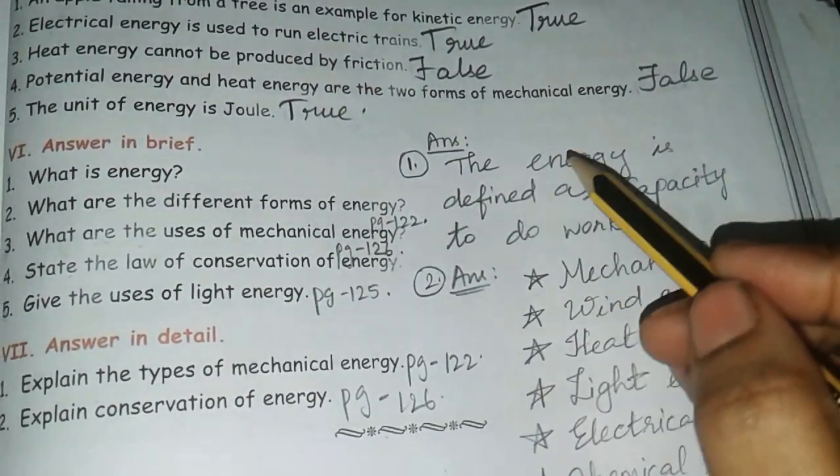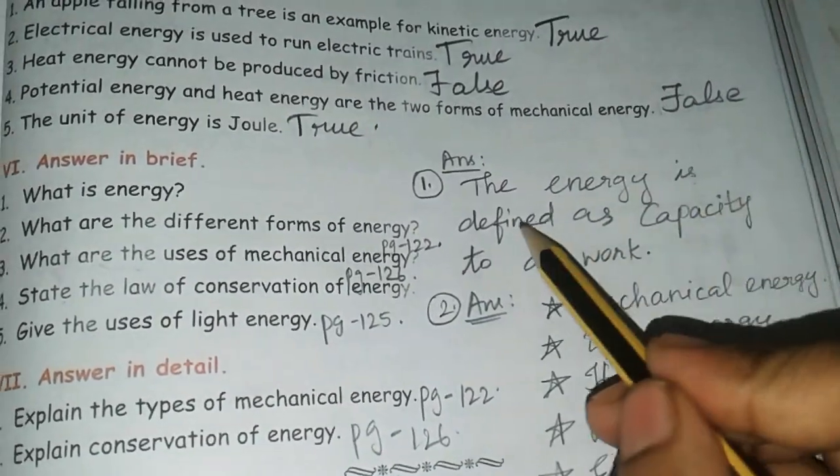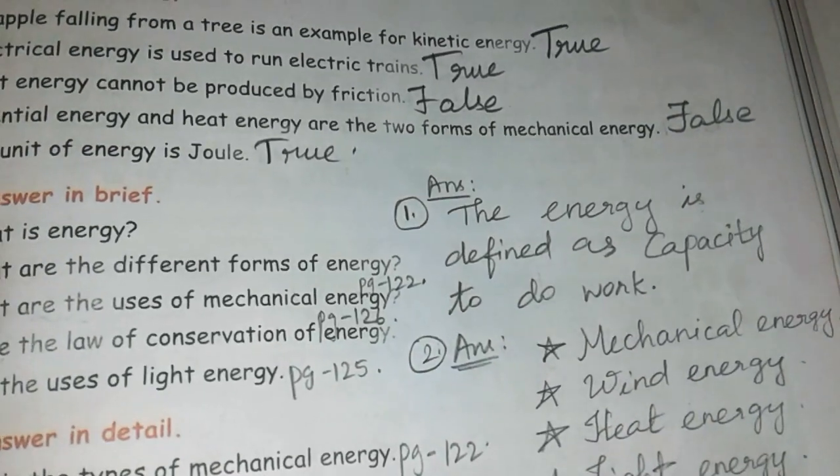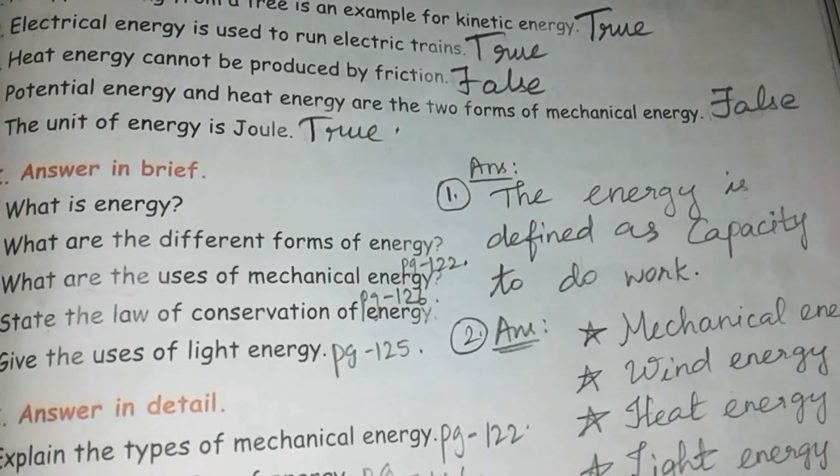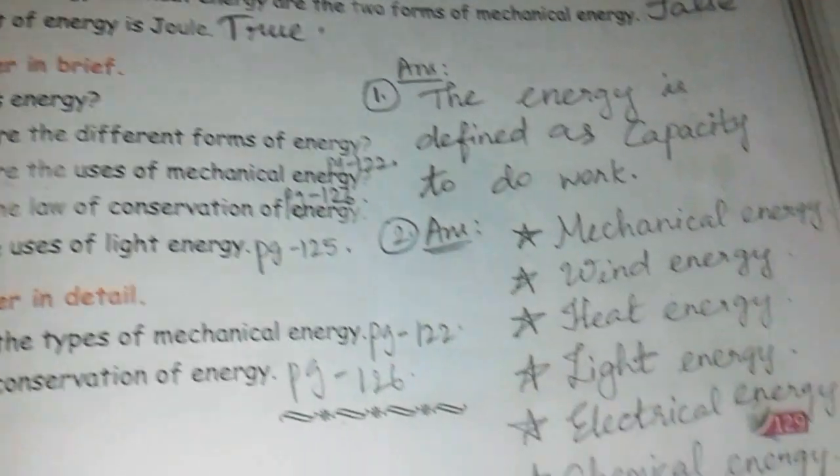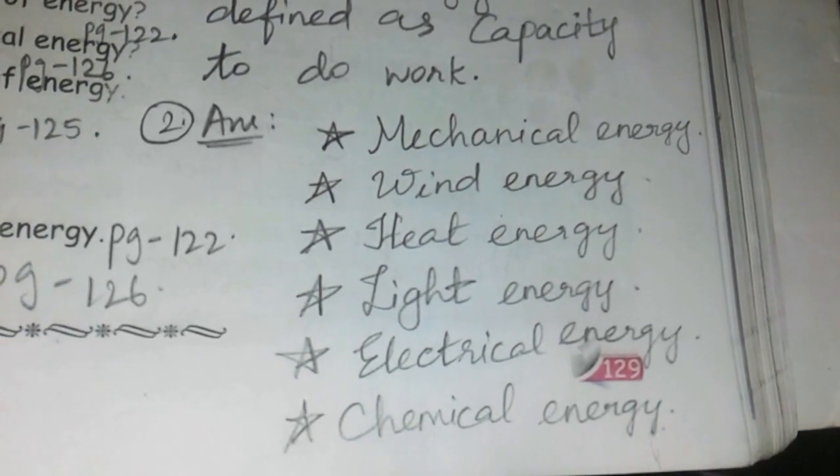Next, what is energy? Answer: Energy is defined as capacity to do work. So the energy is defined as capacity to do work.